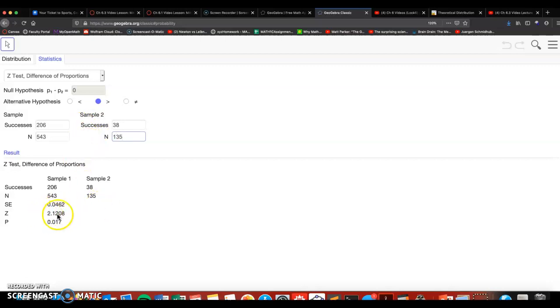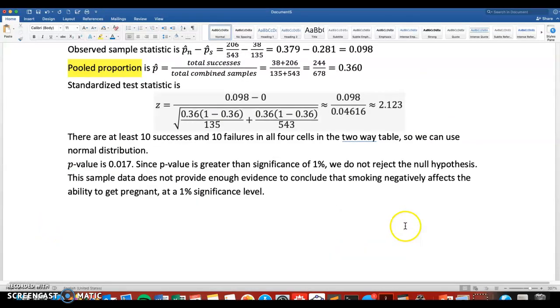Here we get the z-score, 2.121. Again, that's slightly off because of the rounding. GeoGebra just rounds differently than we do, but we get the same p-value, 0.017 right here, which is the same thing we got, 0.017.